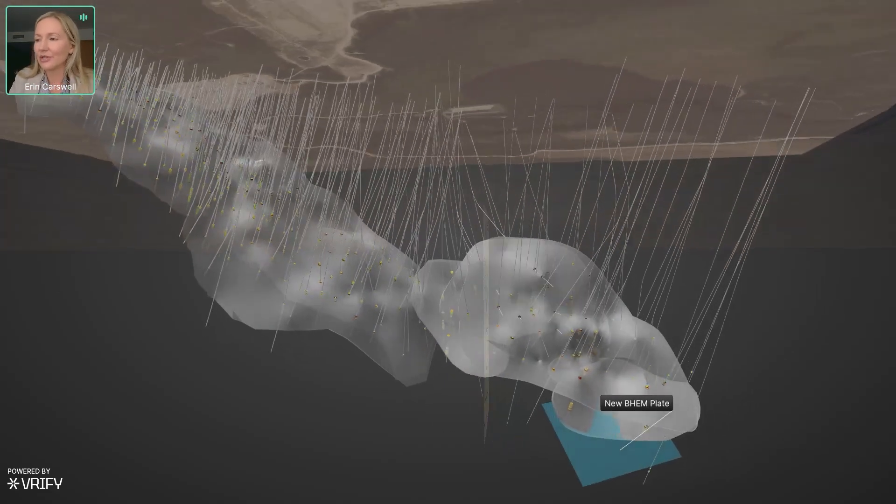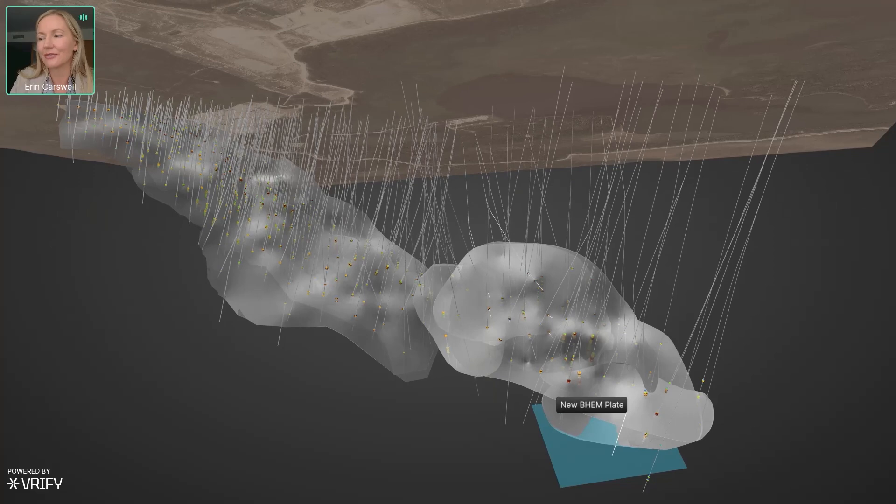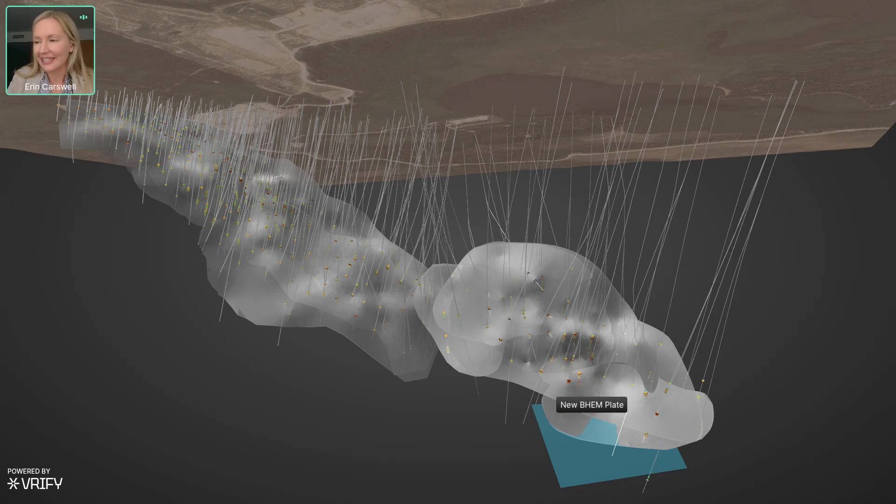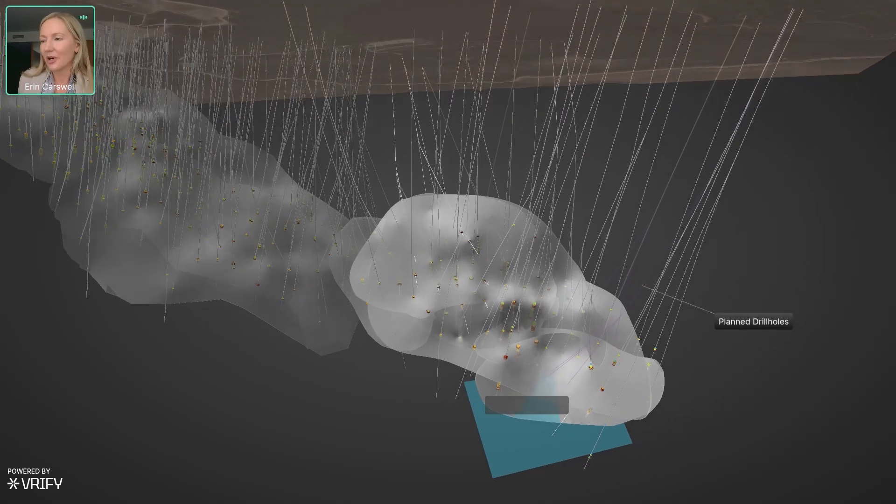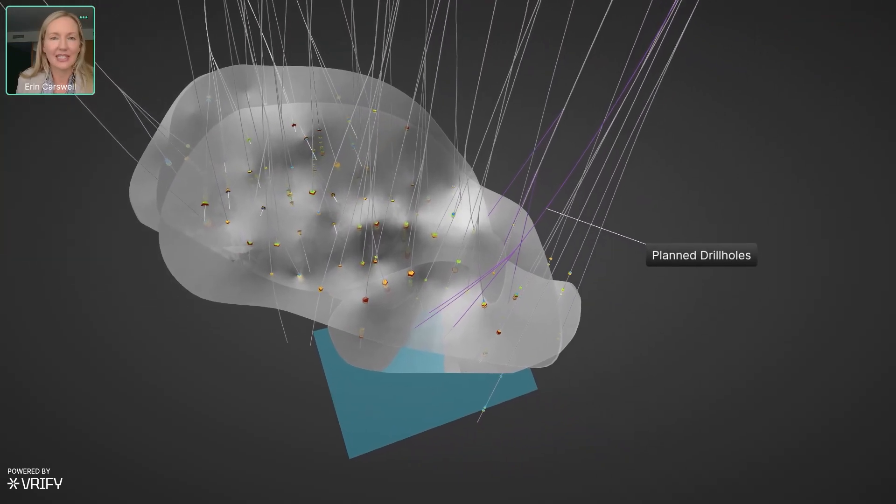We'll swing back out now to the big scale again. And the reason I'm showing this is to remind everyone of where that borehole EM plate was that we identified this year. You can see it there in blue. And what I'm going to show you next are the summer drilling traces. Now we've got two drill rigs out there, like I said, on a land peninsula, putting some holes into the northwestern end of Tesla, which is the area that we can reach from those drill pads.